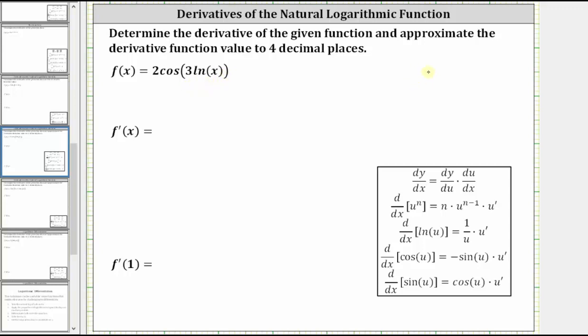Looking at the derivative formulas below with the chain rule built in, we will use the derivative formula: the derivative of cosine u with respect to x is equal to negative sine u times u prime, where u is the inner function, which in our case means u is equal to three natural log x.